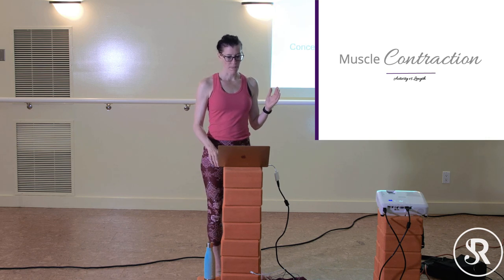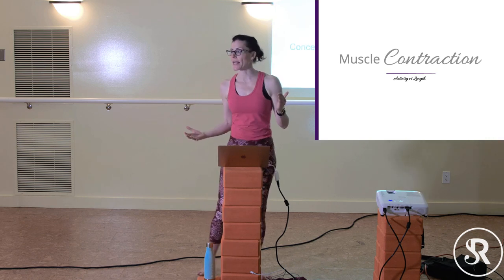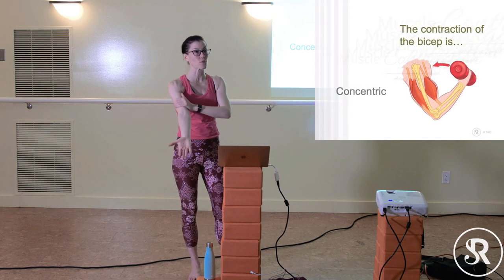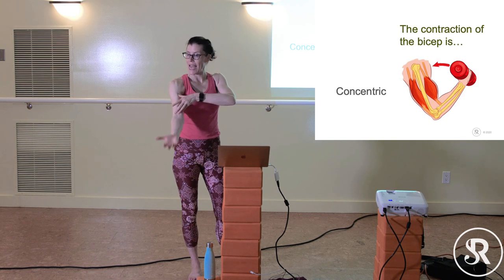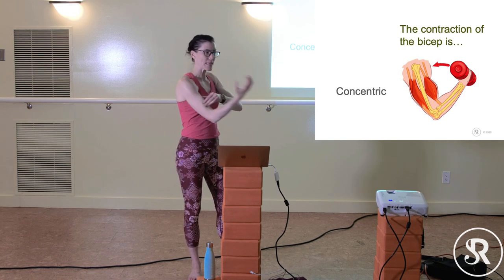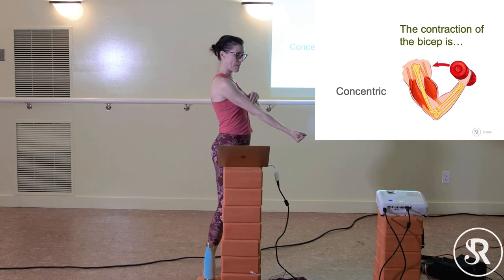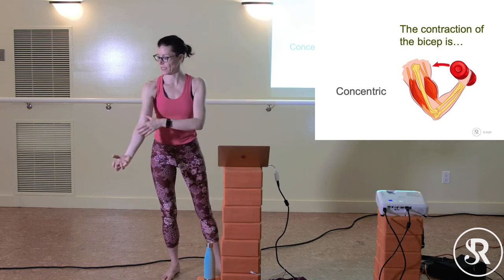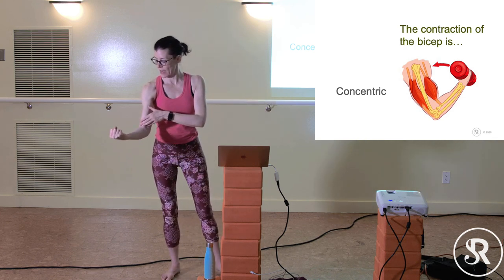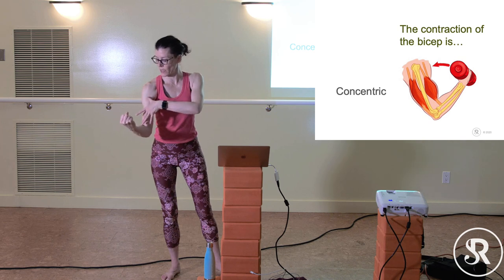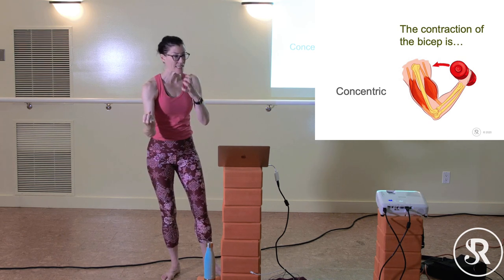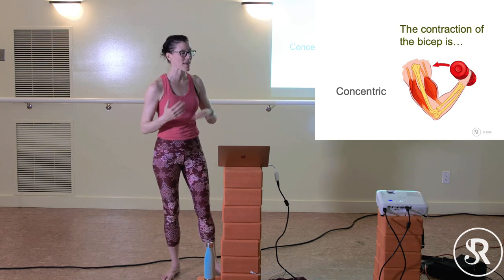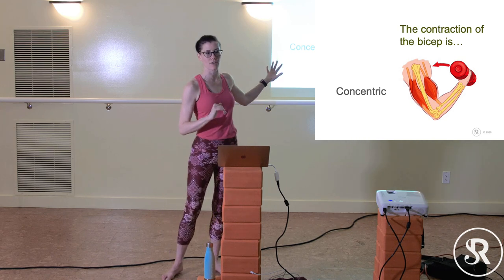Concentric contraction is when a muscle is working and shortening. For example, the bicep: holding a heavy weight and contracting the bicep pulls the two ends closer together — the muscle is working, engaged, and getting shorter. That's called concentric contraction.